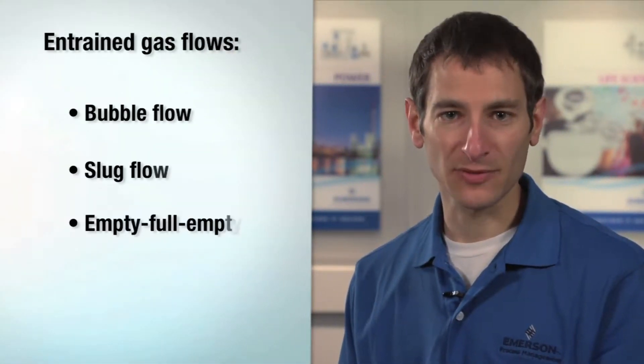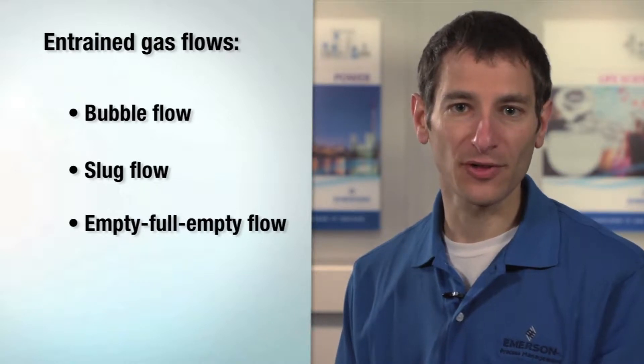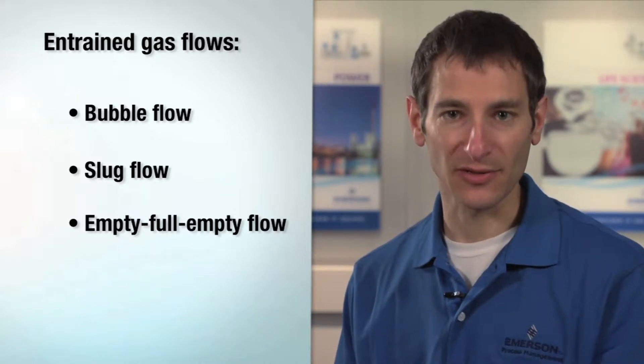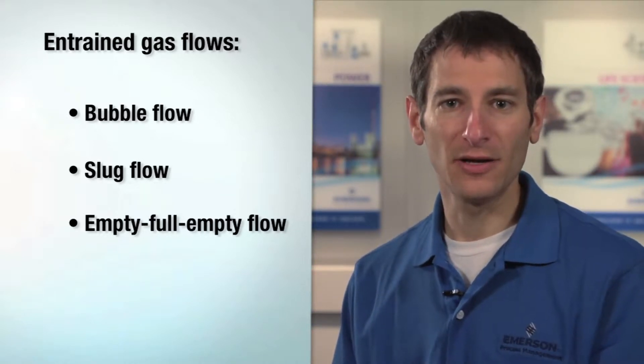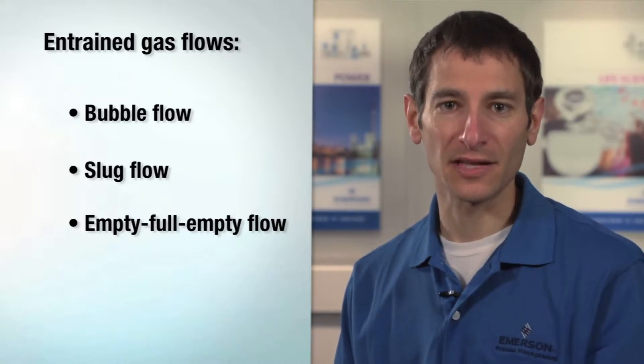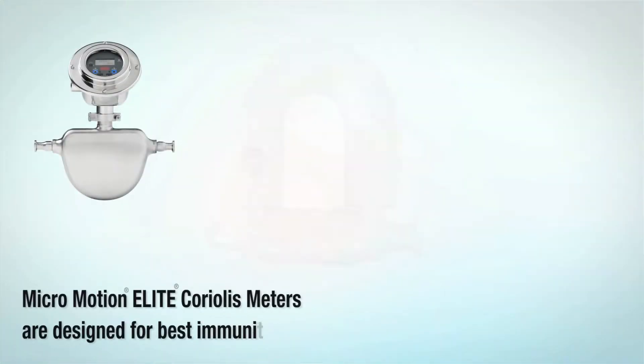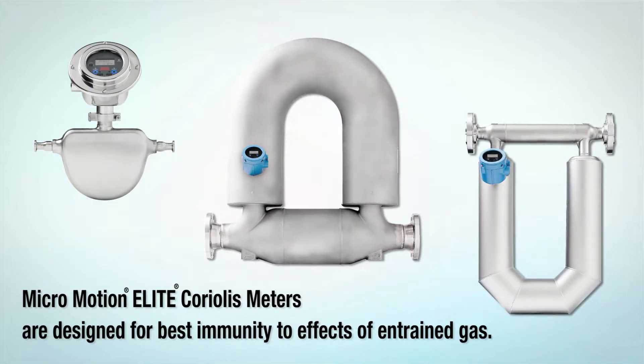We'll discuss three distinct types of entrained gas flows: bubble flow, slug flow, and empty-full-empty flow, and how they can occur both intentionally and unintentionally. Micromotion Elite Coriolis meters are designed for best immunity to the effects of entrained gas.